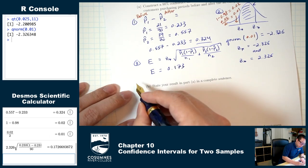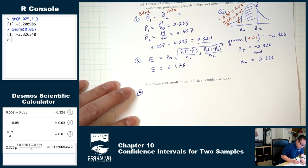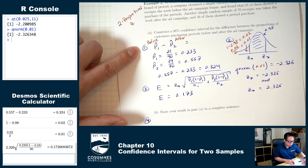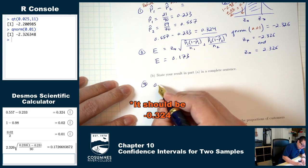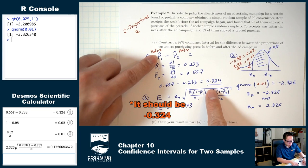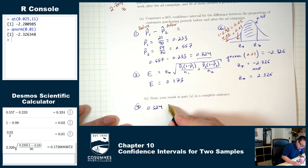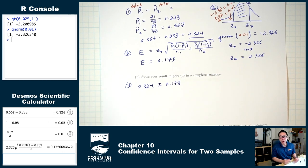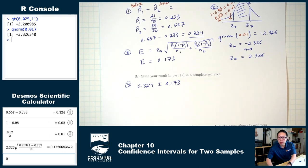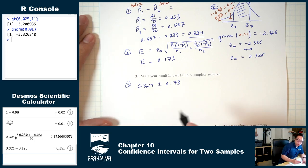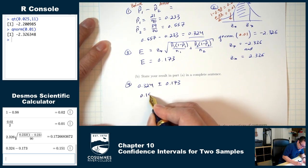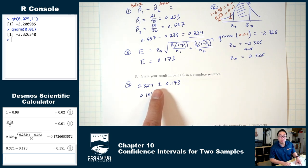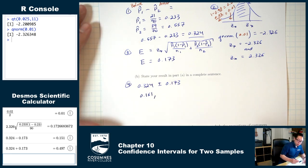Step four: construct the confidence interval. Starting with p1-hat minus p2-hat = 0.324, plus or minus 0.173. Low number: 0.324 minus 0.173 = 0.151. High number: 0.324 plus 0.173 = 0.497. That's the confidence interval.